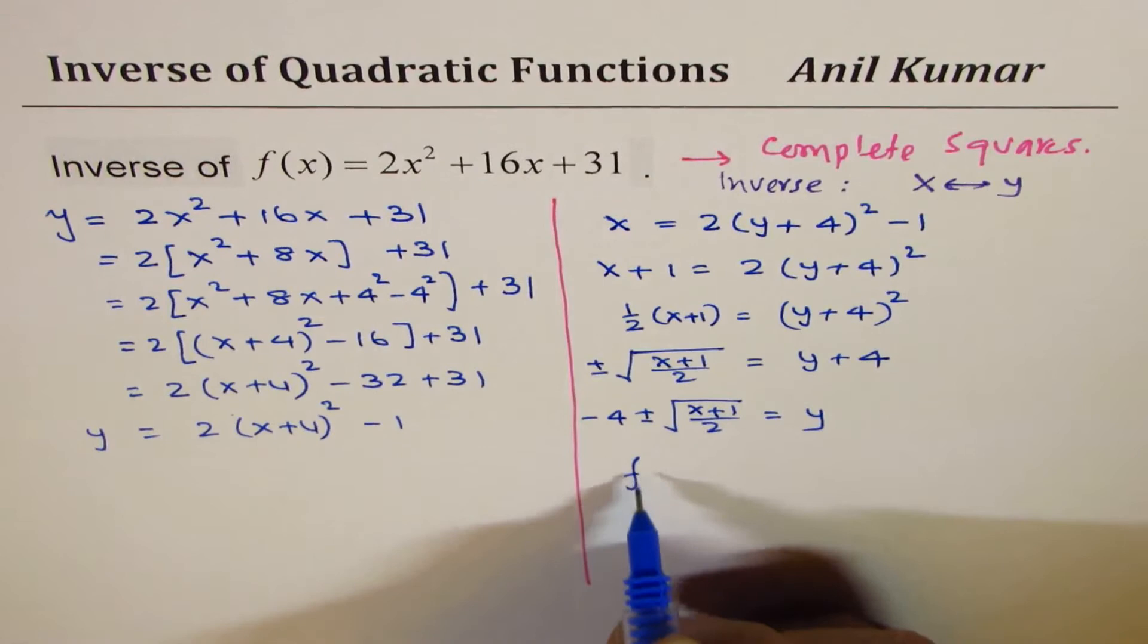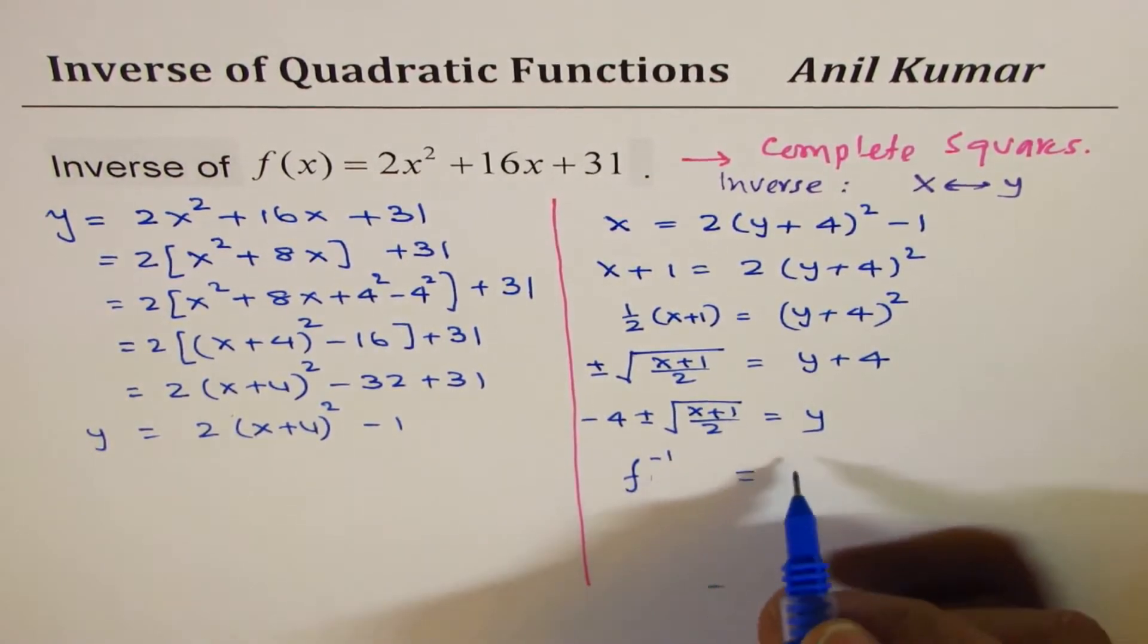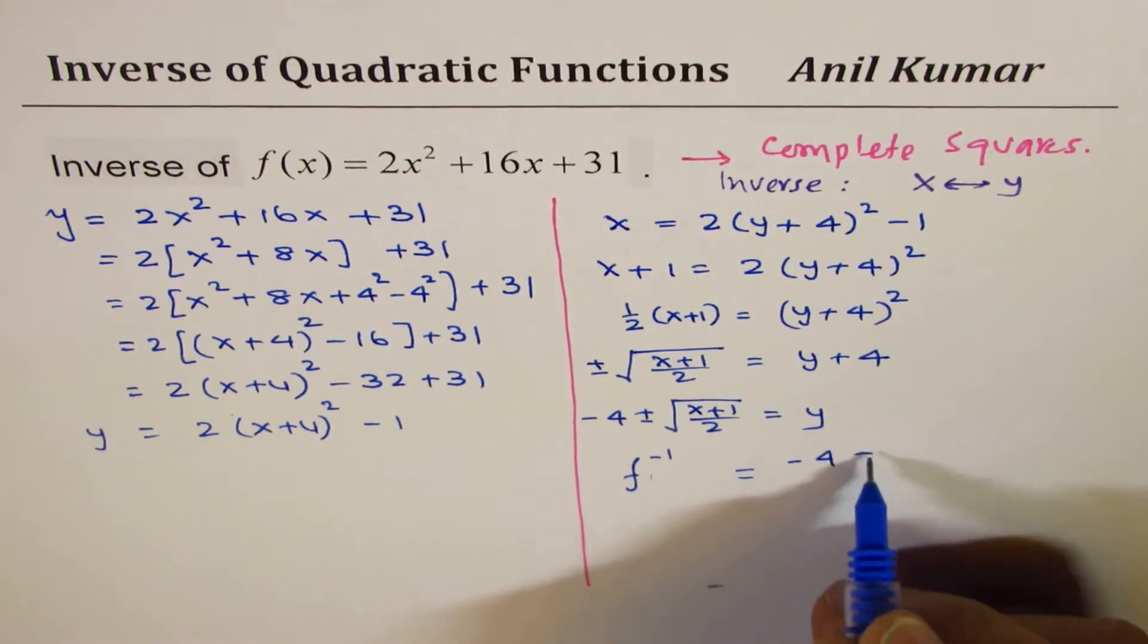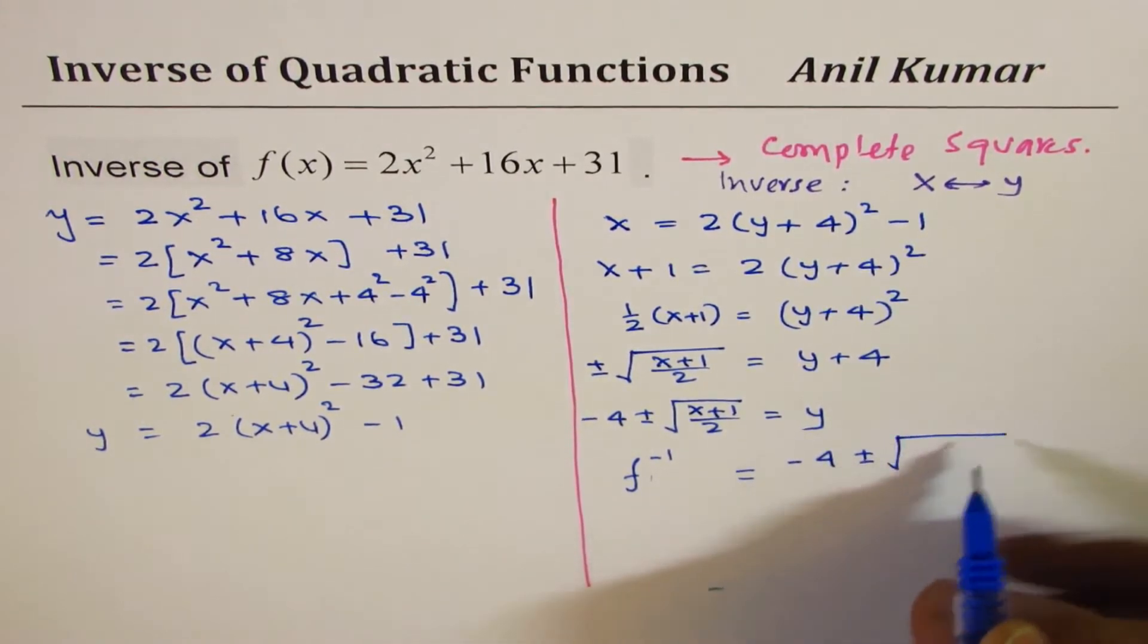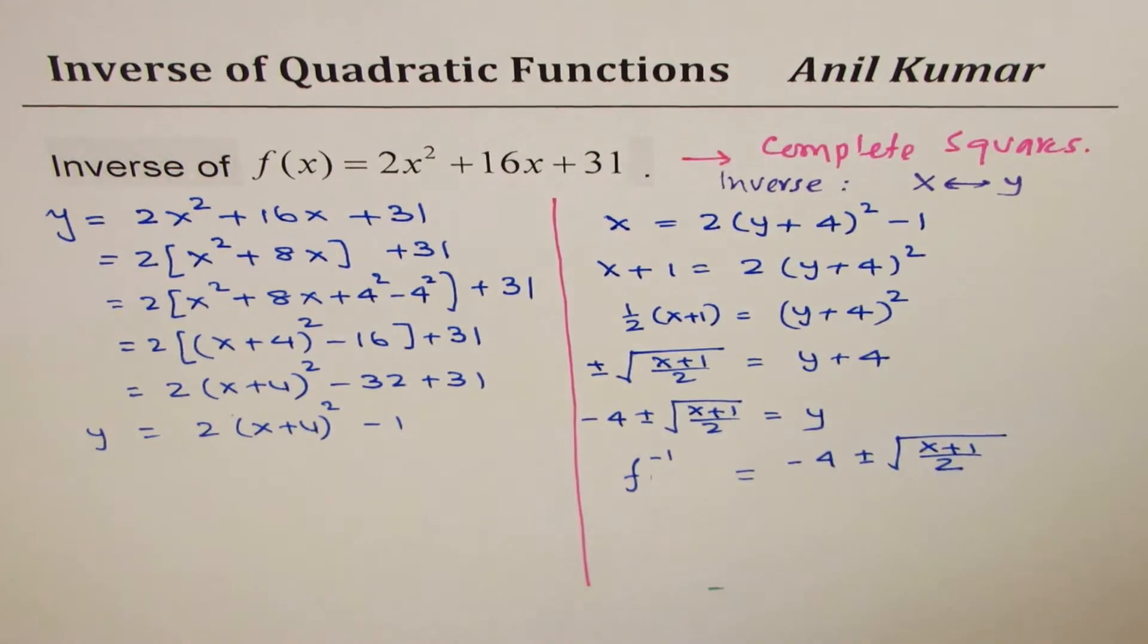So, you get the inverse. I'm not writing x here since it is not a function. As equals to minus 4 plus minus square root of x plus 1 over 2.